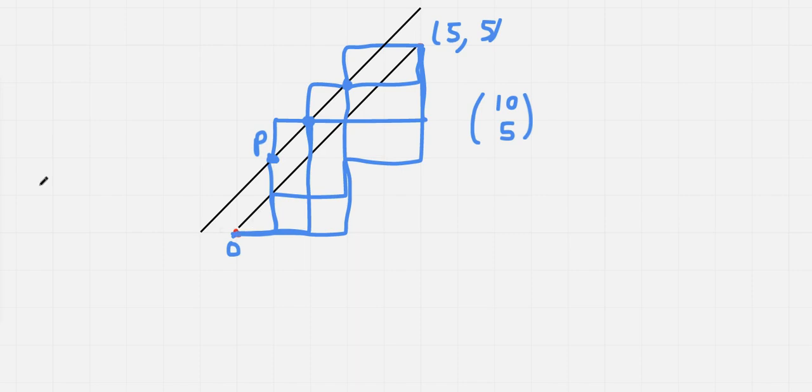Then what we will do is reflect the portion of the path, of the bad path, from the origin to p across the line y equals x plus 1. So here I've reflected it across the line y equals x plus 1.